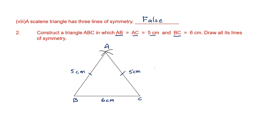Now we have to draw all its lines of symmetry. An isosceles triangle will have only one line of symmetry — the vertical line which bisects the base BC into two halves.